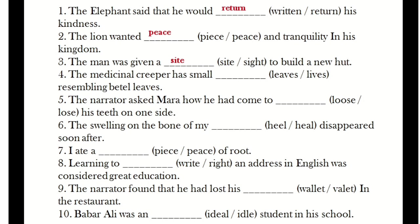Next: 'Medicinal creeper has small dash resembling beetle leaves.' The answer is L-E-A-V-E-S, leaves. Then: 'The narrator asked Mara how he had come to lose his teeth on one side.' The answer is L-O-S-E, lose. Next: 'The swelling on the bone of my dash disappeared soon after.' The two options are heal (H-E-A-L) and heel (H-E-E-L). The correct answer is heel — 'the swelling on the bone of my heel disappeared soon after I ate a piece of root.'